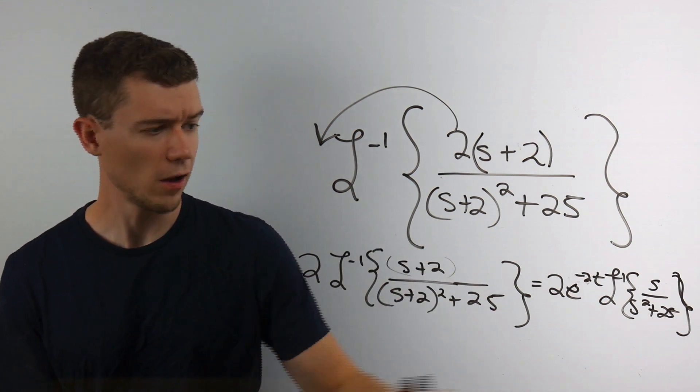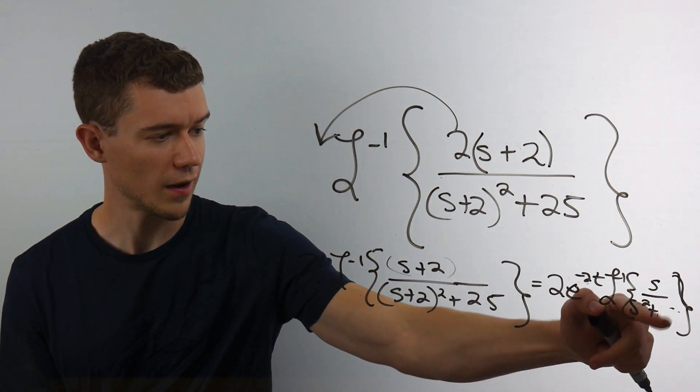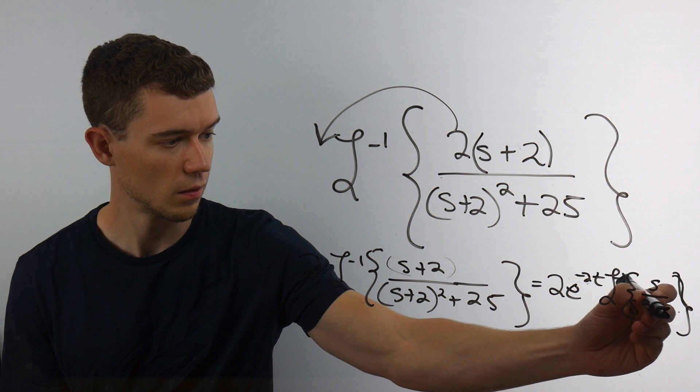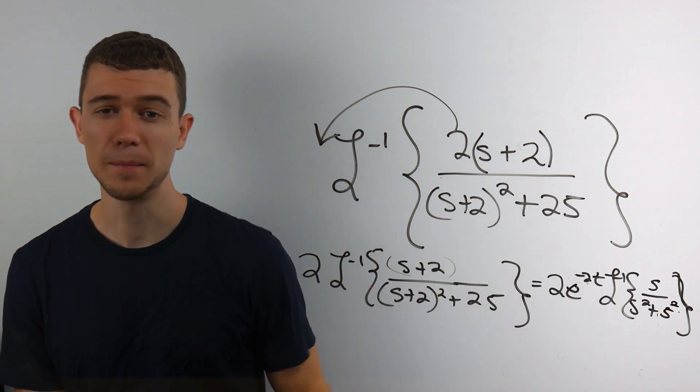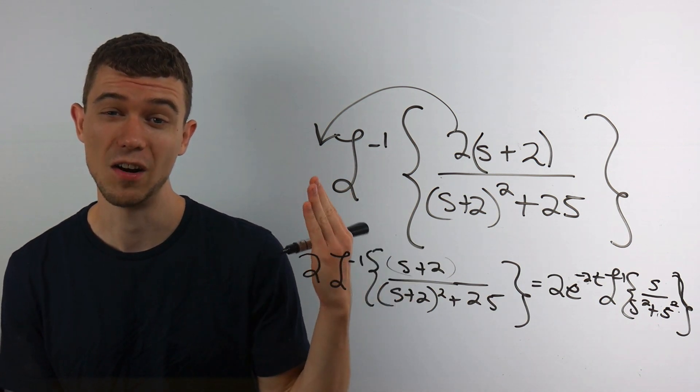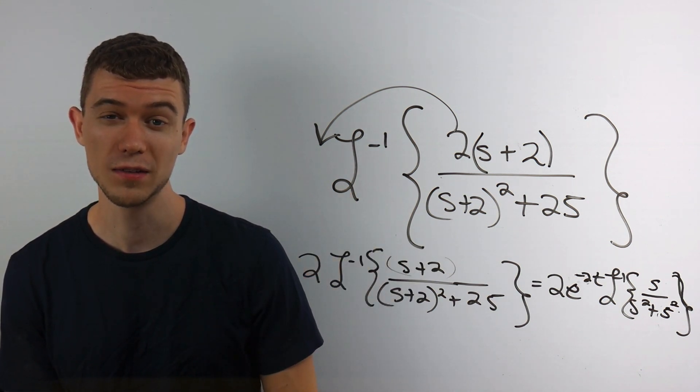And if you like, if it helps, you can write 25 as 5 squared. Because if you write it like this, this is something you would see almost exactly on a table of Laplace transforms.